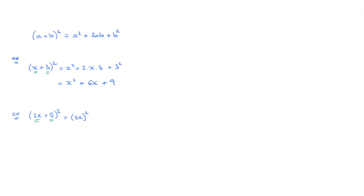That would lead us to (3x) squared plus 2 times 3x times 5 plus 5 squared. This first term is written in parentheses because it is 3x replacing a — both 3 and x need to be squared. When we square parentheses in which all terms are being multiplied, the power distributes onto each term, so onto 3 and x. This leads us to 3 squared times x squared plus 30x plus 25, giving us 9x squared plus 30x plus 25.